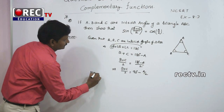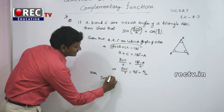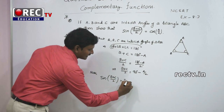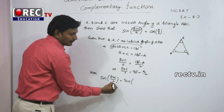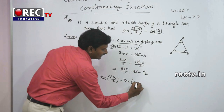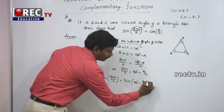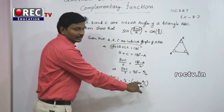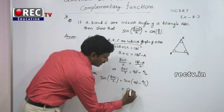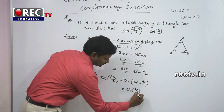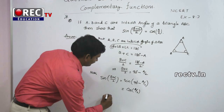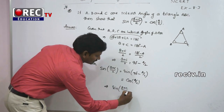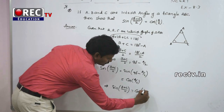Now consider sin((B+C)/2). Substituting (B+C)/2 = 90° - A/2, and using sin(90° - θ) = cos θ, we get sin((B+C)/2) = cos(A/2), which is the required result.